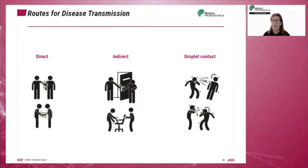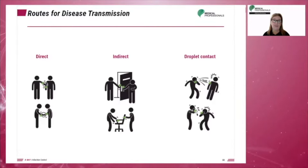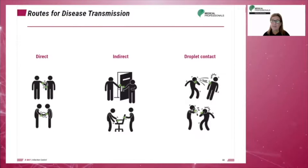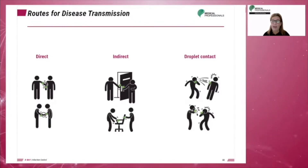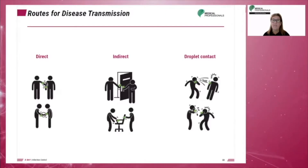Droplet transmission is a form of indirect transmission. However, in droplet transmission, the disease generates droplets that are propelled for a short distance before depositing on a susceptible host. Droplets are generated by the infected person by coughing, sneezing, singing, talking, or doing procedures such as bronchoscopy. The droplets can land on the host's conjunctiva, nasal mucosa, or mouth. Droplets typically travel about three feet in the air before dropping to the ground or landing on a host. Examples of droplet spread are influenza, measles, and mumps.